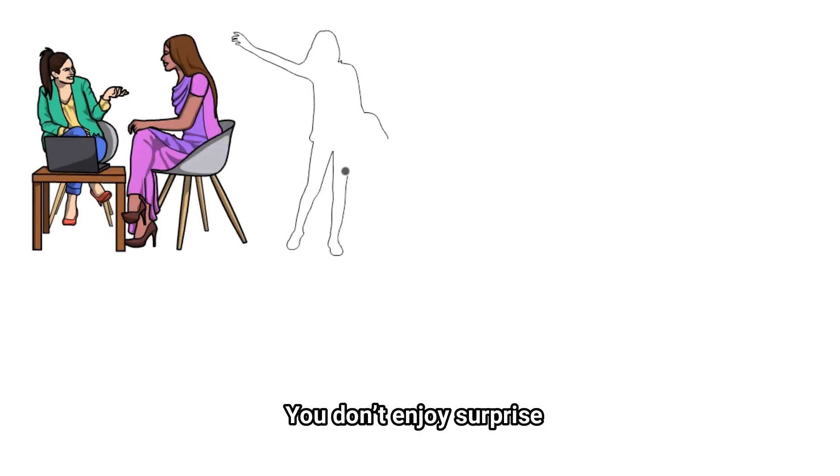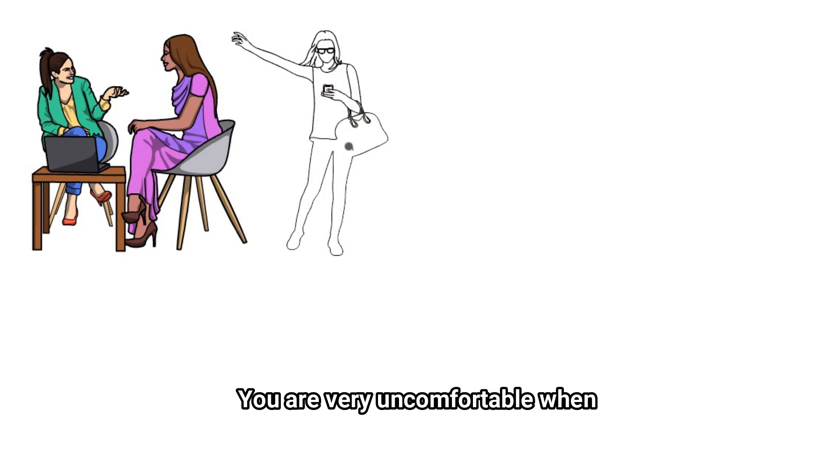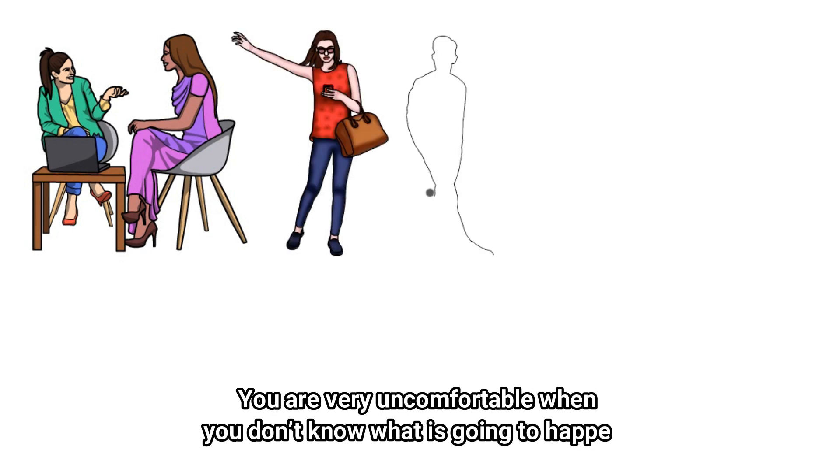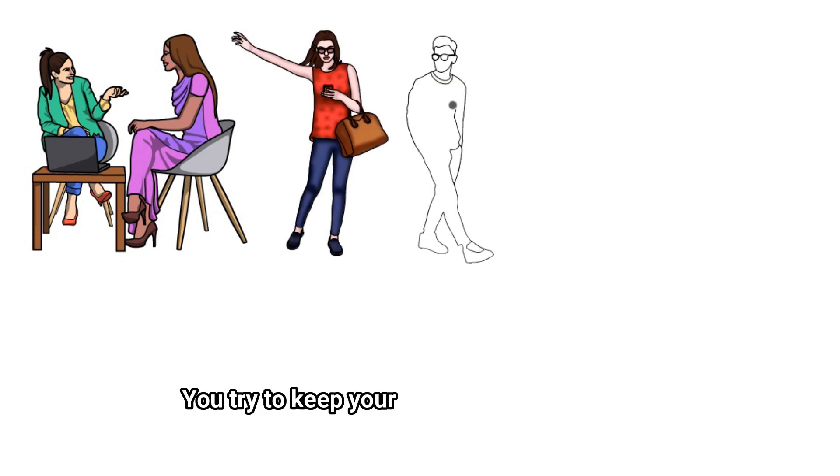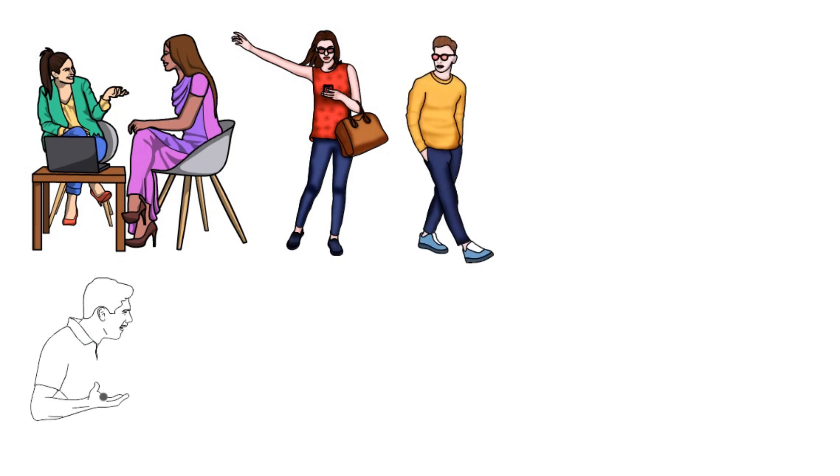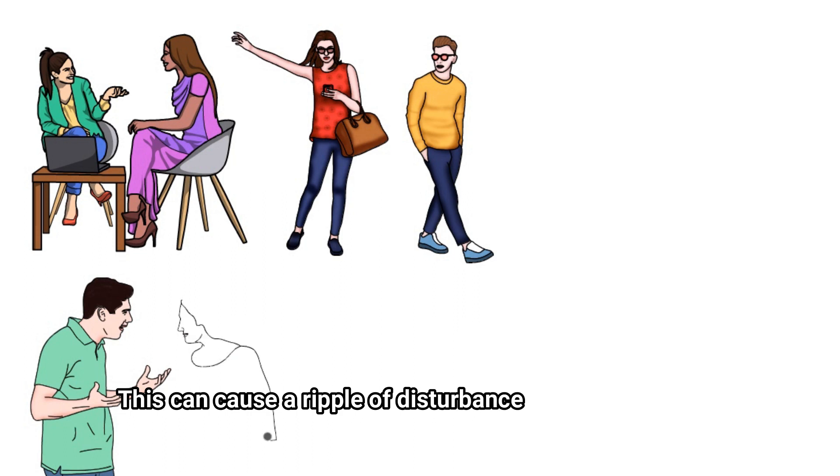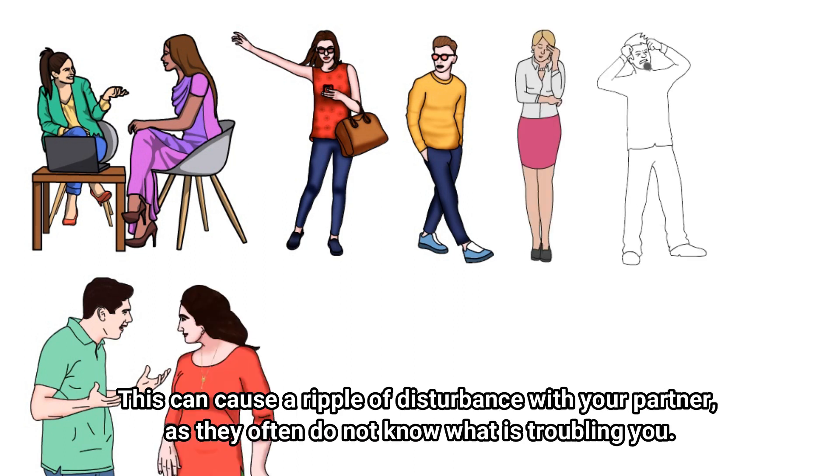You don't enjoy surprises. You are very uncomfortable when you don't know what is going to happen. You try to keep your concerns and problems to yourself as much as possible. This can cause a ripple of disturbance with your partner as they often don't know what is troubling you.